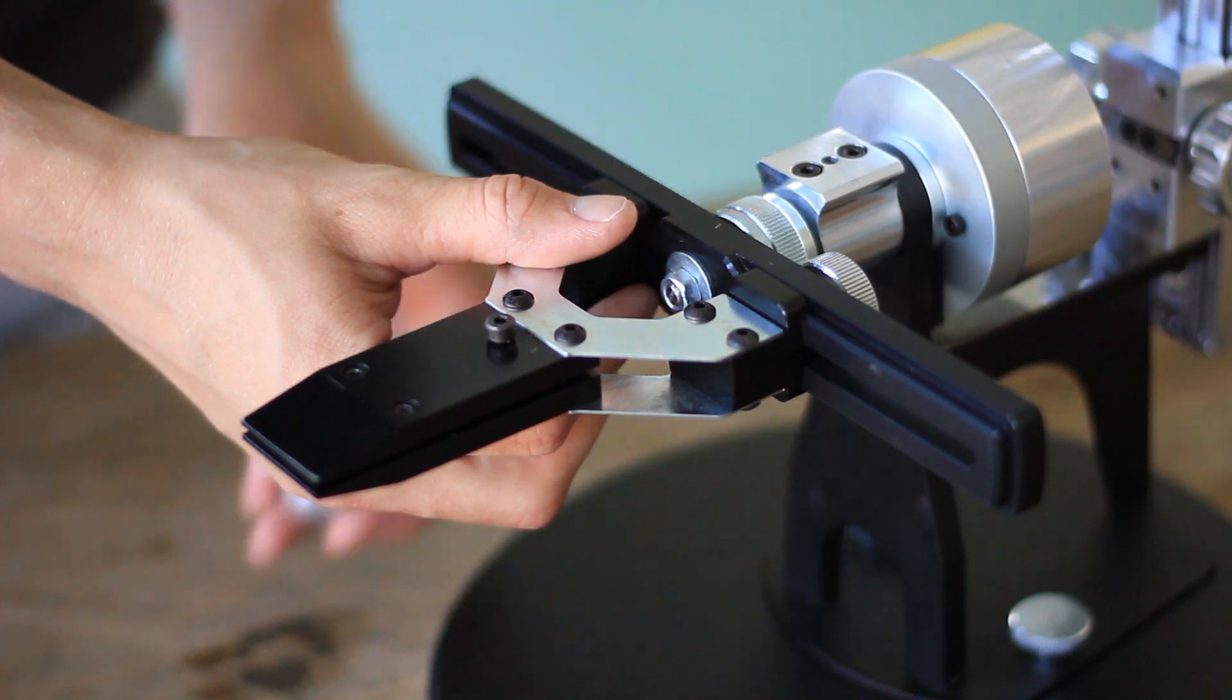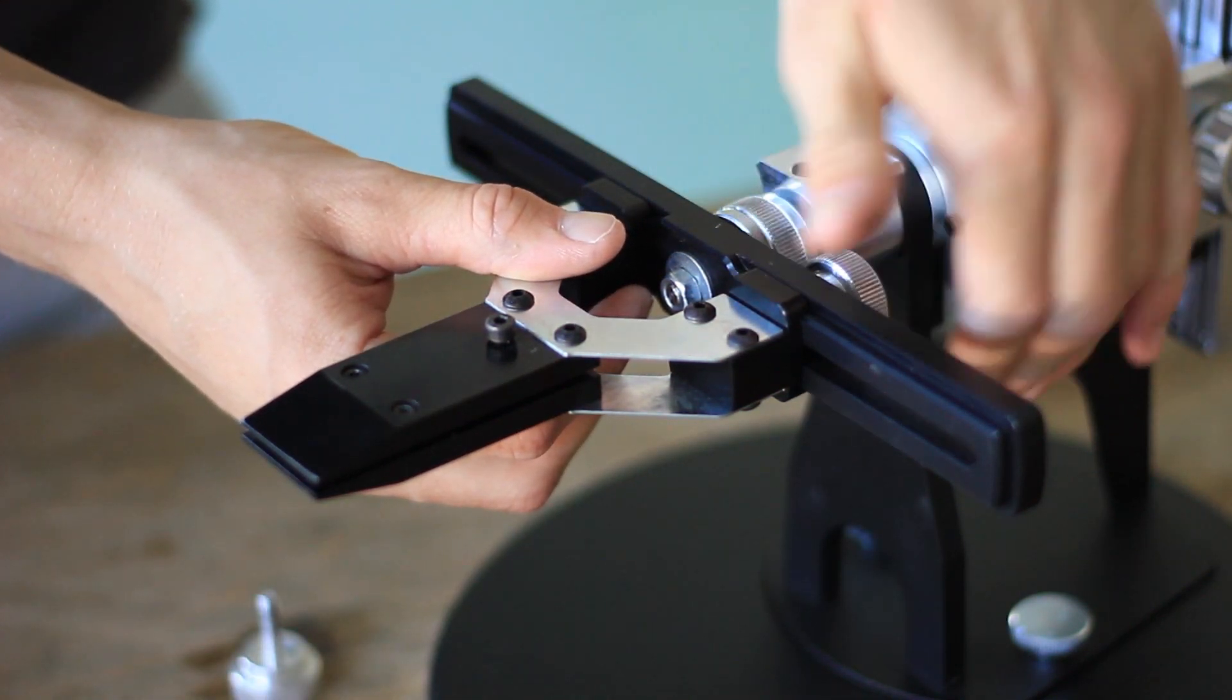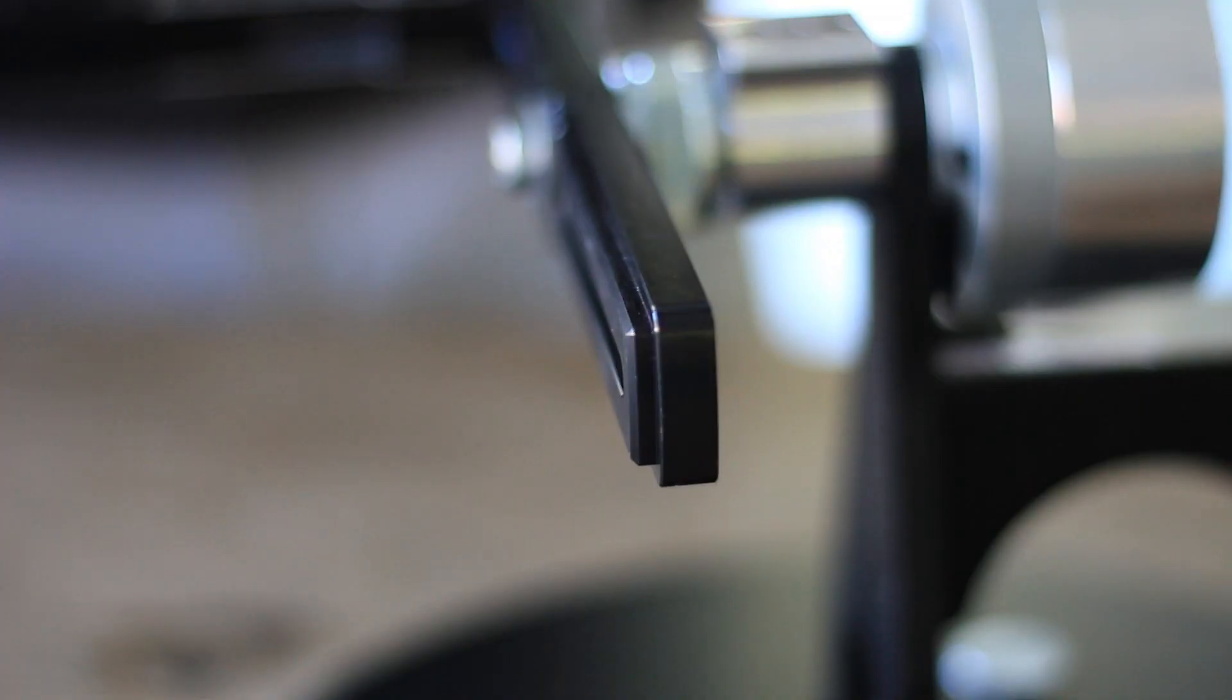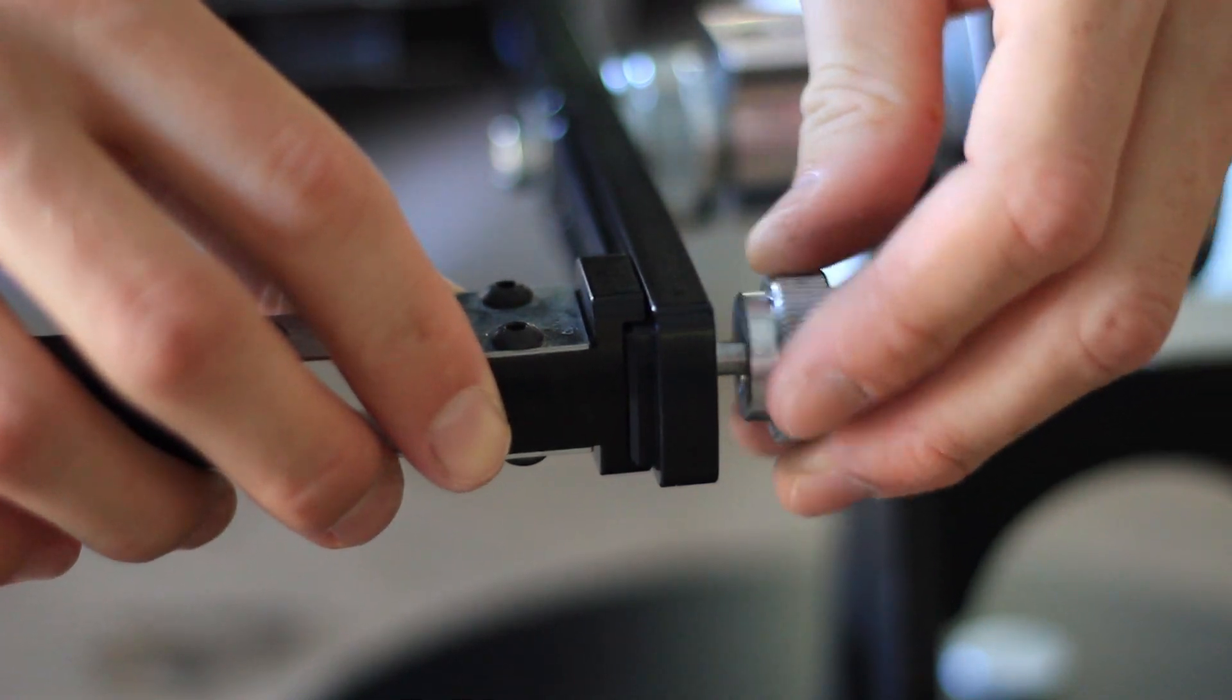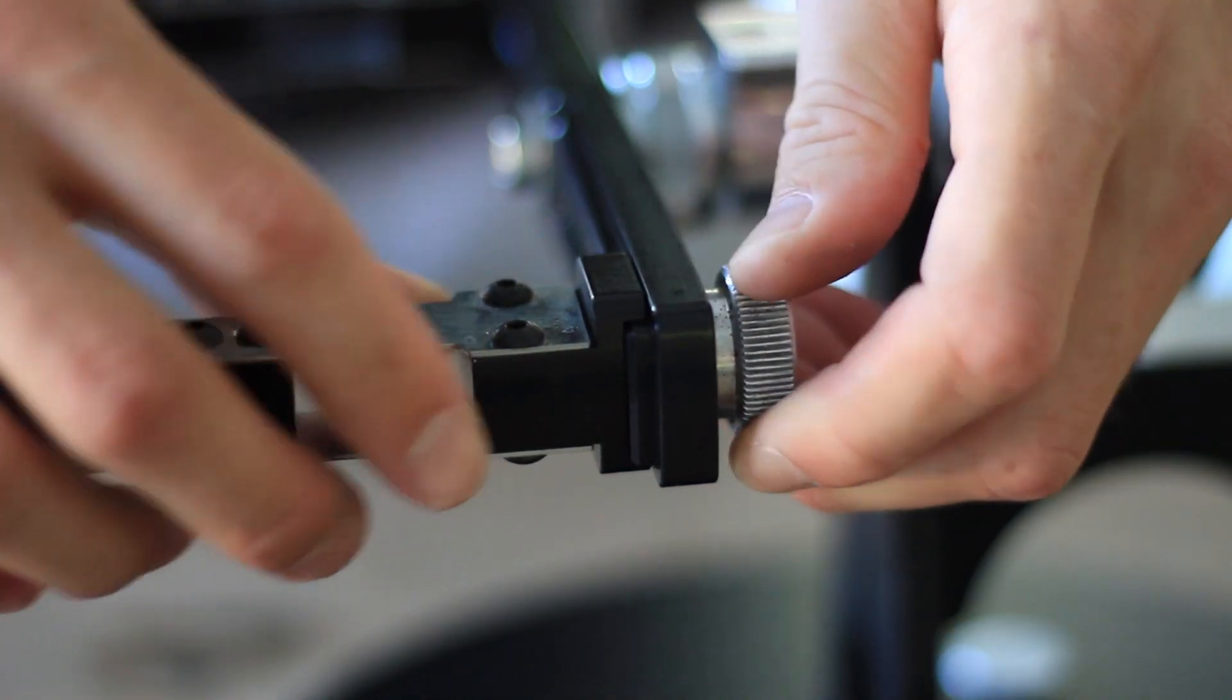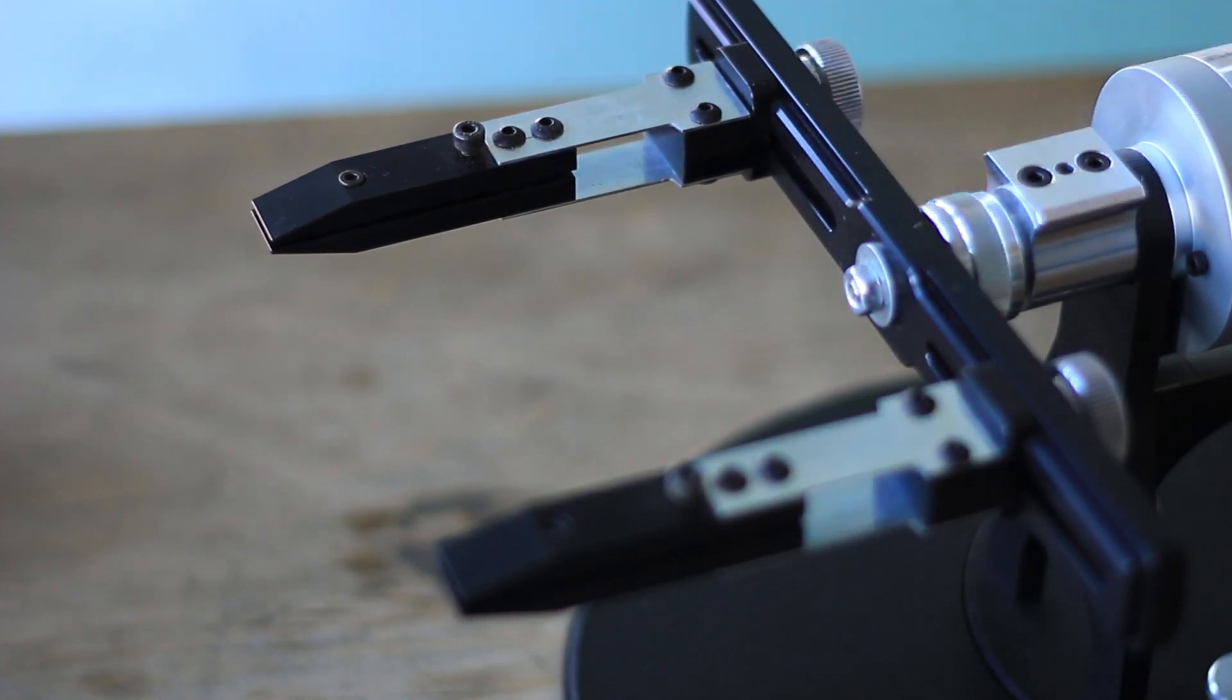This machine comes with two sets of clamps. You see me remove the standard clamp, which is good for small and medium sized knives. And on comes the second set of clamps, designed to hold even the longest of blades. This works perfect for kitchen knives too. It takes only a couple of seconds to change the clamps.